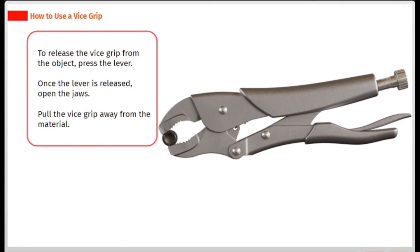To release the vice grip from the object, press the lever. Once the lever is released, open the jaws. Pull the vice grip away from the material.